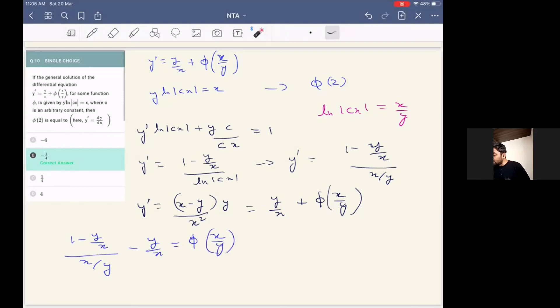So effectively, rather than simplifying it like this, we are just leaving the expression as it is for the sake of convenience of putting the values. So now we need to find out phi of two. That means we have to put x equals 2, y equals 1. So obviously y by x will be one by two.